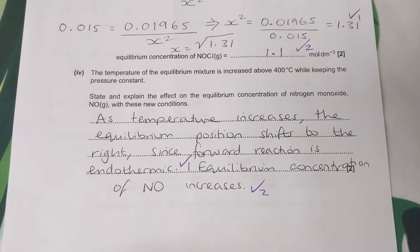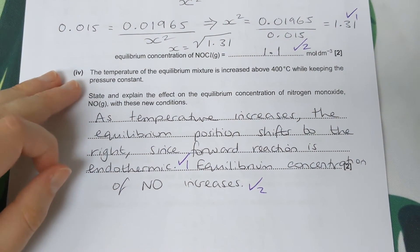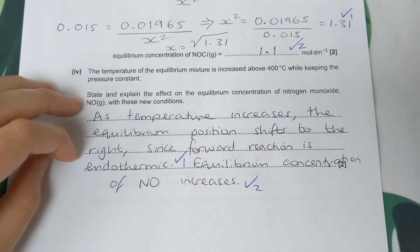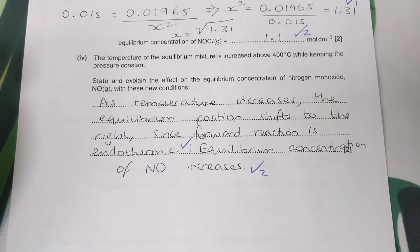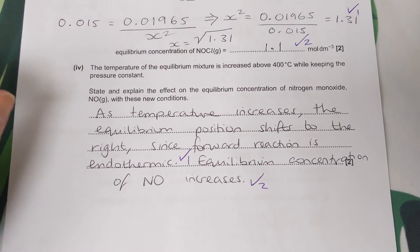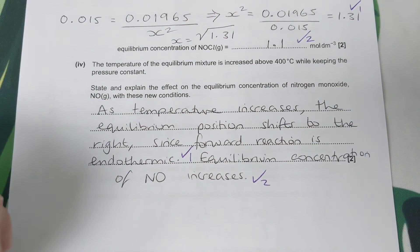Last question: the temperature of an equilibrium mixture is increased above 400 degrees while keeping the pressure constant. State and explain the effect on the equilibrium concentration of nitrogen monoxide with these new conditions.